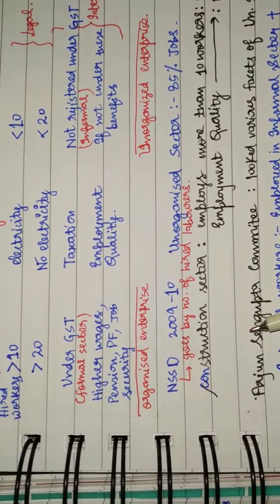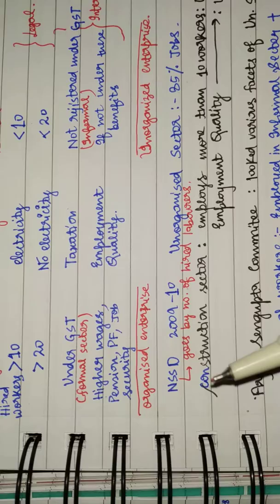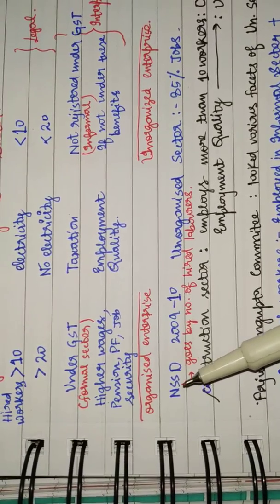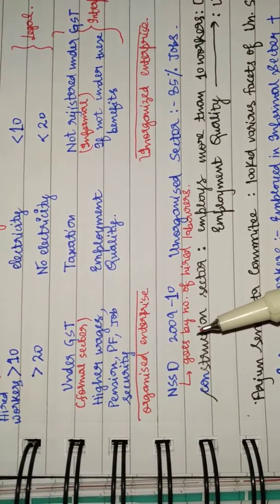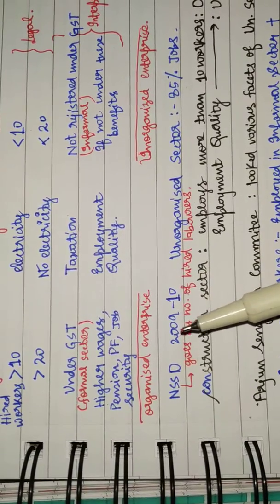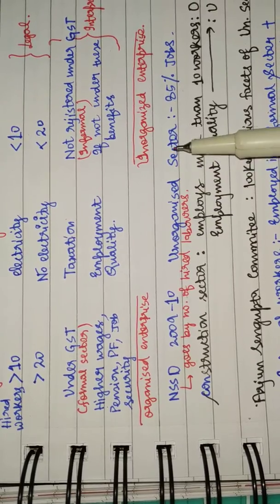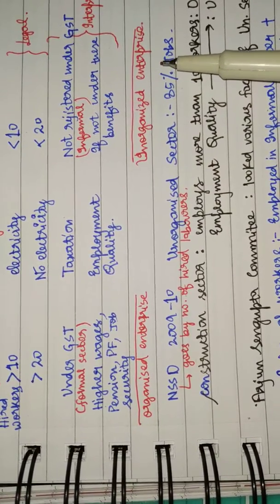Now let's see what is the ratio of total number of workers in India in both the sectors. As far as NSSO data claims, in the year 2009-10, it says that unorganized sector accounts for 85 percent of jobs.